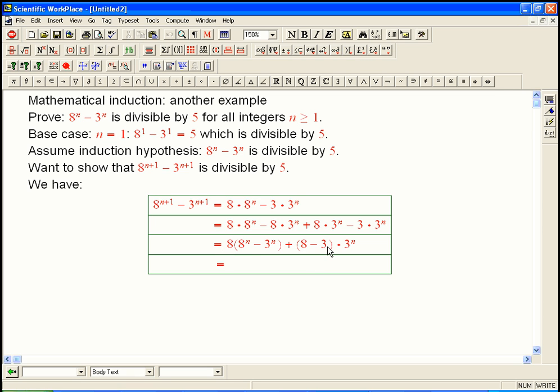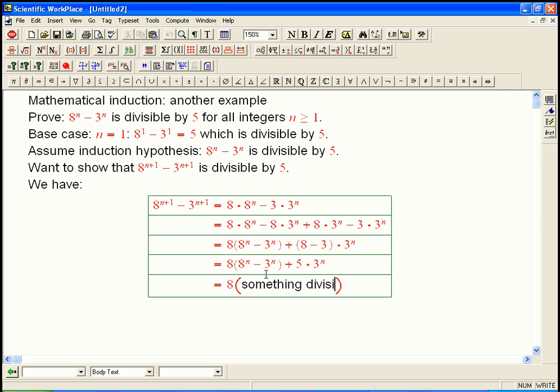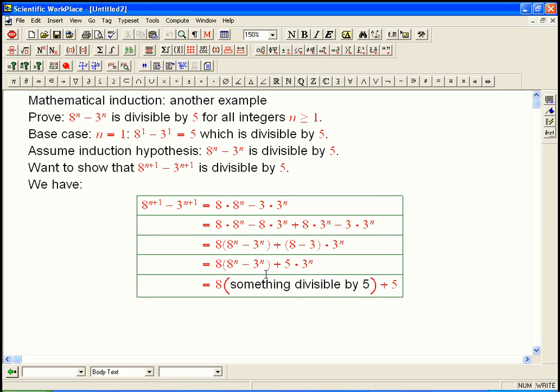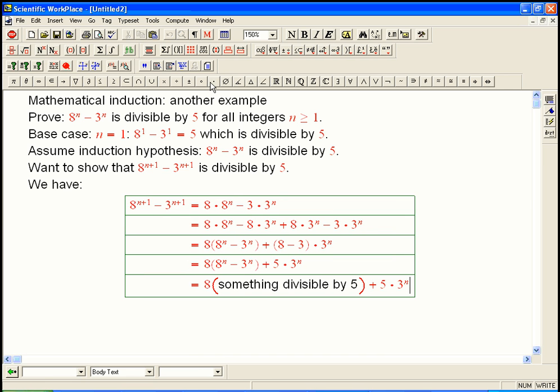8 - 3, that's 5. So this term is certainly divisible by 5. If I knew that this term was divisible by 5, I'd be done. And guess what? I do know that that's divisible by 5 because 8^n - 3^n, that's exactly 8 × (something divisible by 5) plus 5 × (something that's random, doesn't matter).